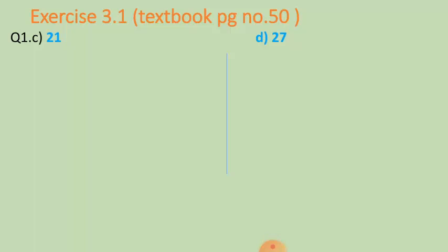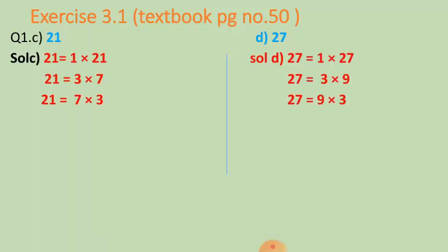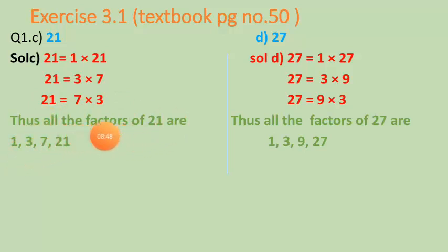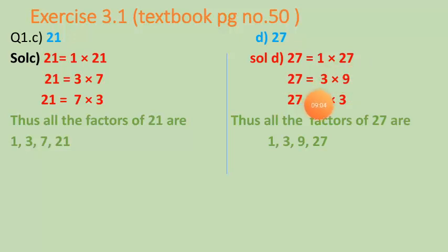The next numbers in question one are twenty-one and twenty-seven. For twenty-one: one multiplied with twenty-one gives twenty-one, and three multiplied with seven gives twenty-one, so the factors of twenty-one are one, three, seven, and twenty-one. For twenty-seven: one multiplied with twenty-seven gives twenty-seven, and three multiplied with nine gives twenty-seven, so the factors of twenty-seven are one, three, nine, and twenty-seven.